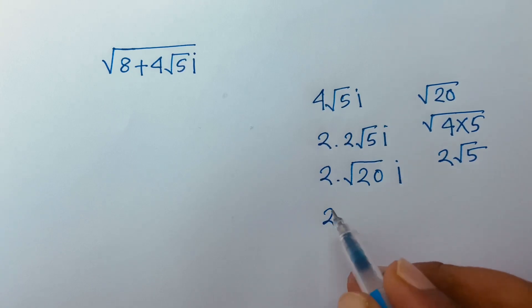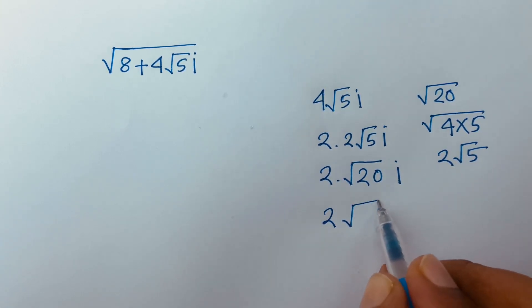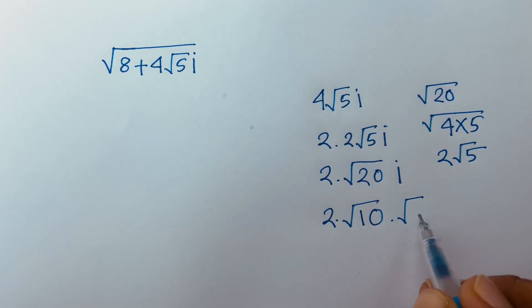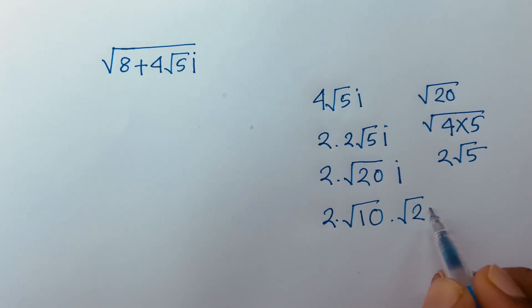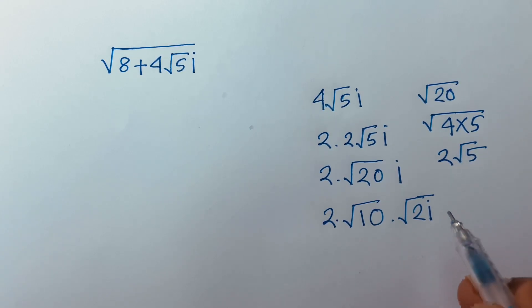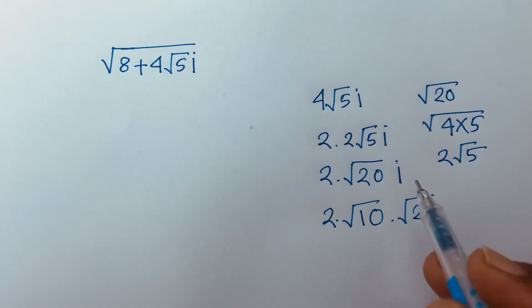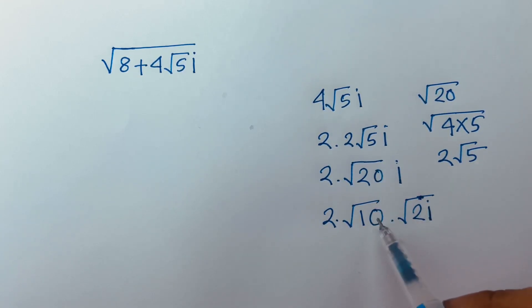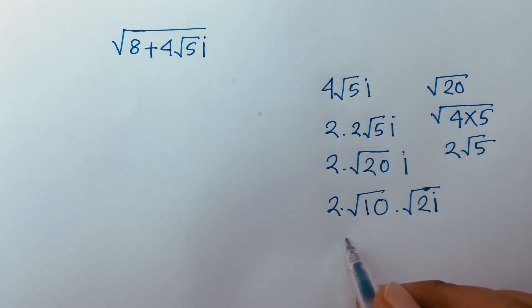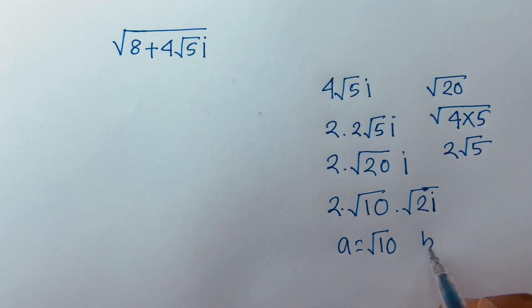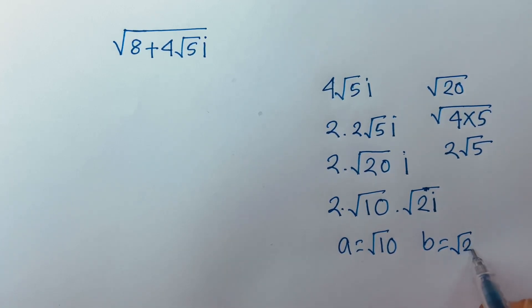Now I can rewrite this easily as √10 times √2·i, since 10×2 = 20. So I can identify a = √10 and b = √2·i.